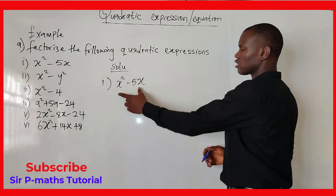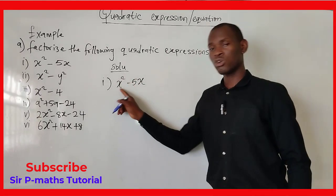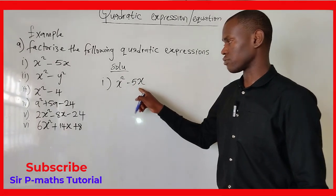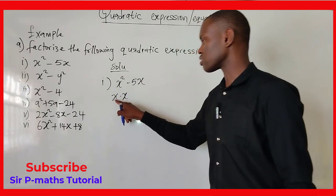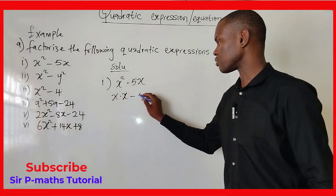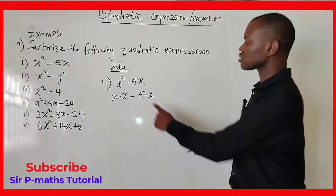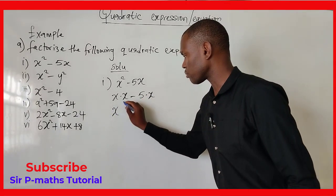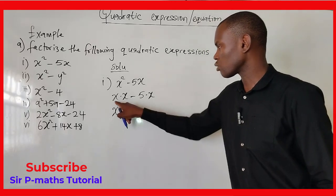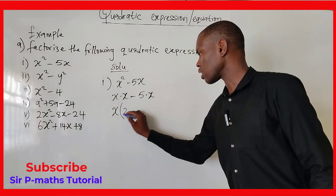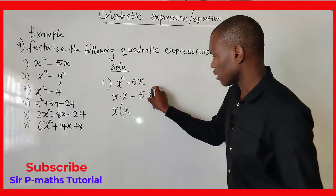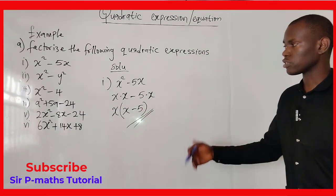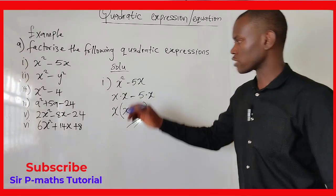For the first example, all we need to do to factorize the expression is to check for a common term. I have 5x and x² here. Note that x² means x times x, and 5x means 5 times x. So x is common — I bring one x outside. What remains in the bracket is x + 5. That is how we factorize this quadratic expression.